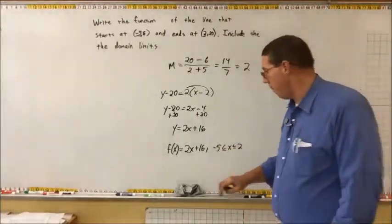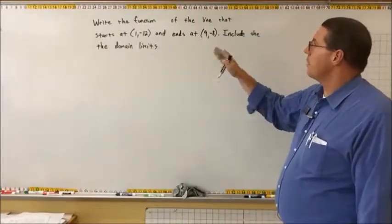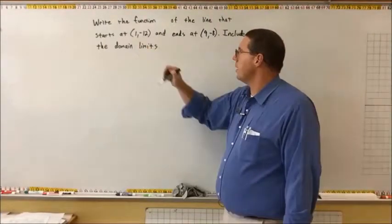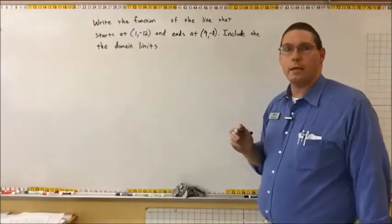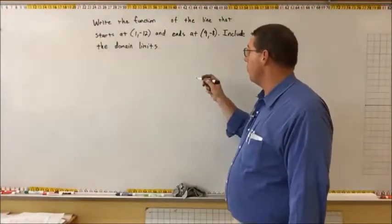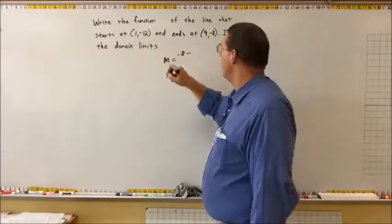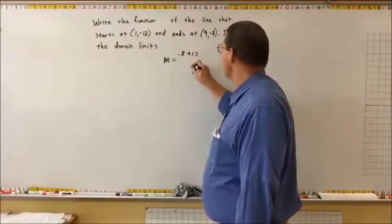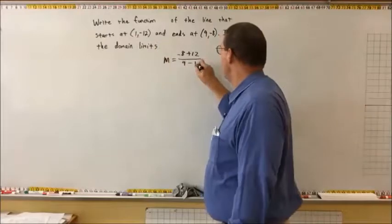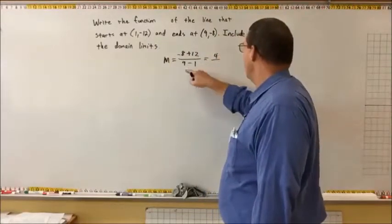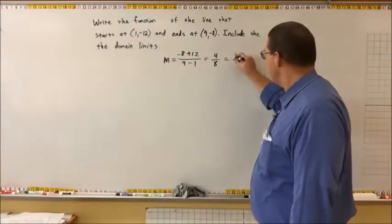Let's try one more. Write the function of the line that starts at (1, negative 12) and ends at (9, negative 8), include the domain limits. We need the slope: m equals y2 minus y1 over x2 minus x1, so negative 8 minus negative 12 over 9 minus 1, which is 4 over 8, equals one half. So the slope is one half.